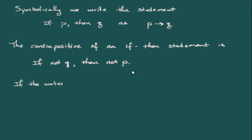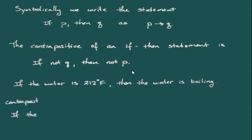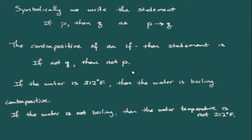An example: if the original statement is 'if the water is 212 degrees Fahrenheit, then the water is boiling,' then the contrapositive is 'if the water is not boiling, then the water temperature is not 212 degrees.' An important property of the contrapositive is that it is logically equivalent to the original — they have the same truth values regardless of the values of P and Q. It's saying the same thing in a different way.